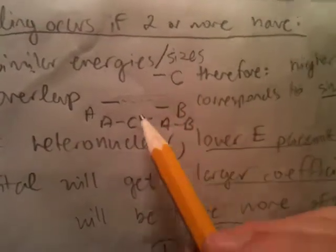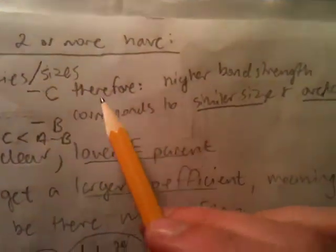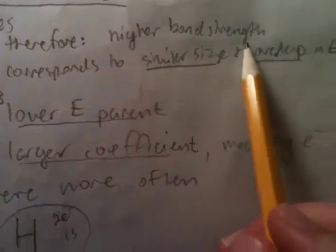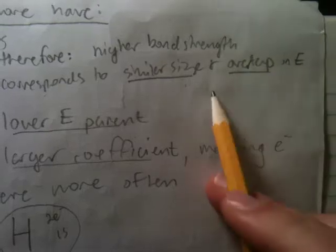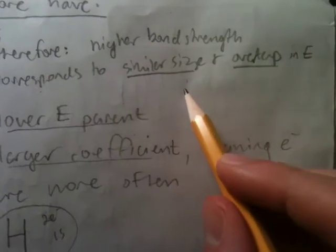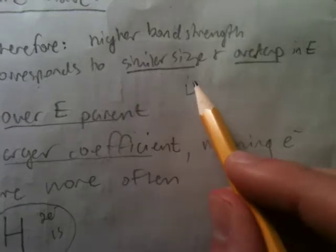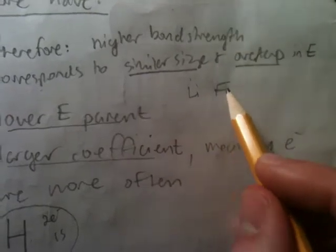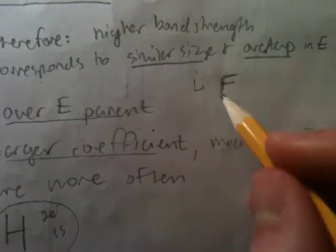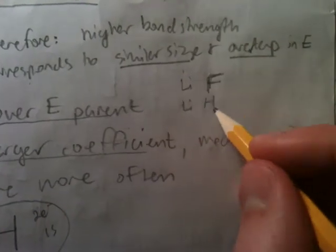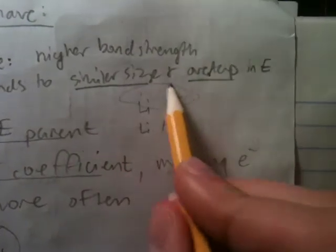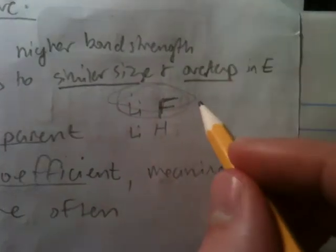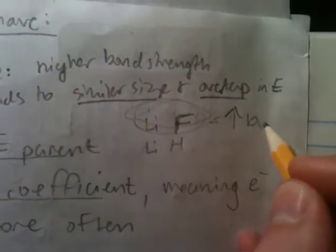I like to think things in simple terms, so this helps me view this — hopefully it helps you as well. Therefore, what we can deduce is that higher bond strengths correspond to similar-sized and overlapping energies. One example of this is lithium fluoride and also lithium hydride. These have similar sizes and overlap, so their bond strengths are pretty high.